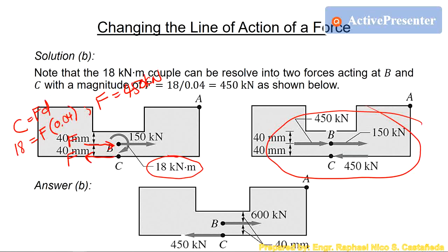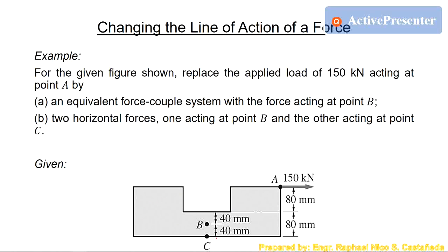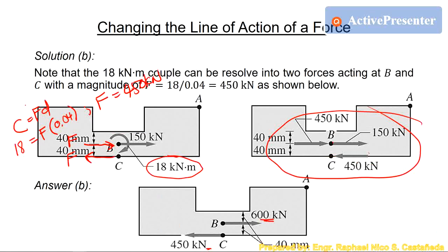Since we have two forces at point B both going to the right, we can simply add them: 450 plus 150 equals 600 kN. The remaining force at point C is 450 kN. So the answer for letter B is: a horizontal force of 600 kN to the right at point B, and a horizontal force of 450 kN to the left at point C. That's the answer for the two horizontal forces, one at B and one at C.